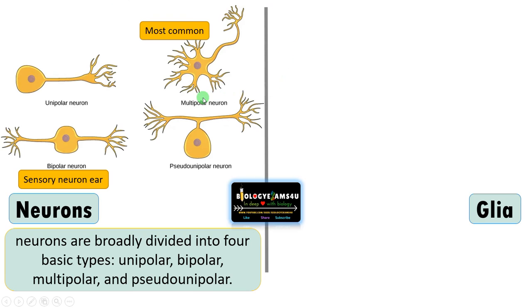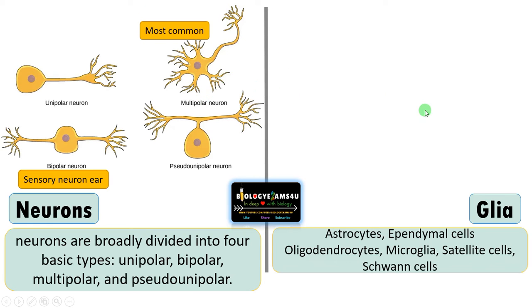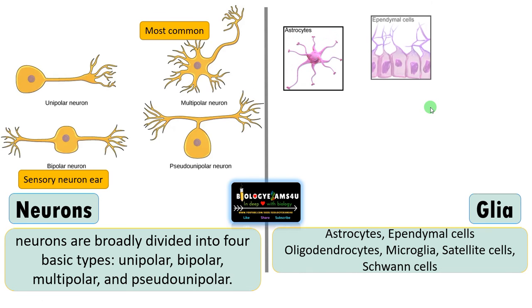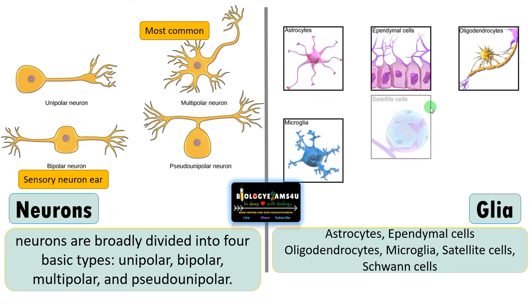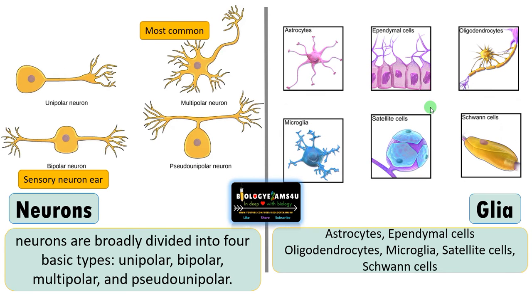The most common neuron in humans is the multipolar neuron. Glial cells have different types: astrocytes, ependymal cells, oligodendrocytes, microglial cells, satellite cells, and Schwann cells.